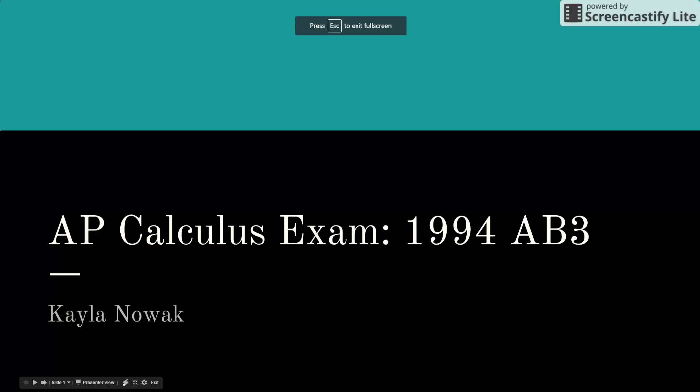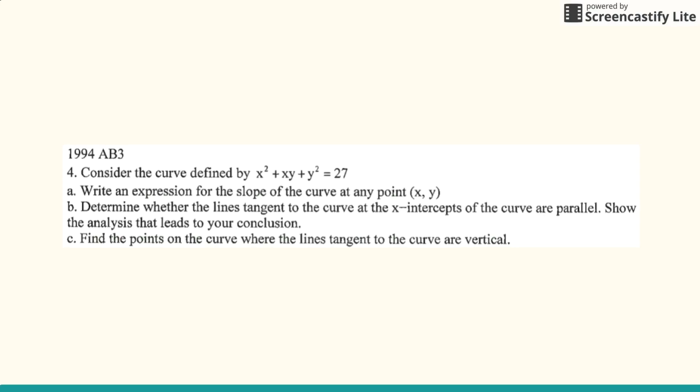Today, we will be working on the fourth problem in the AP Calculus 1994 AB exam. Here we have the equation x squared plus xy plus y squared equals 27.